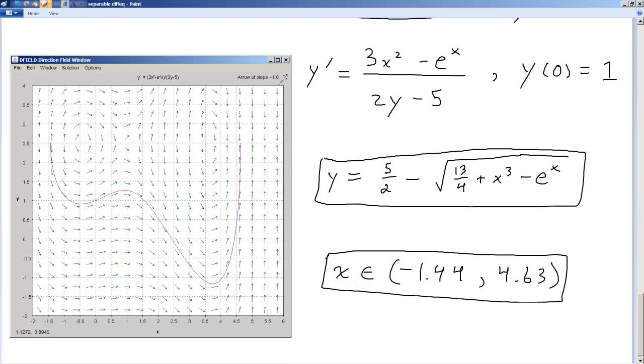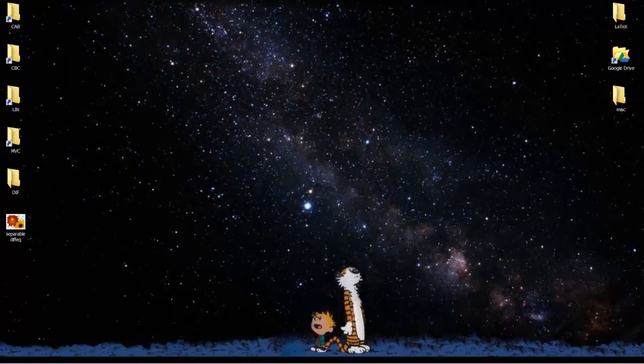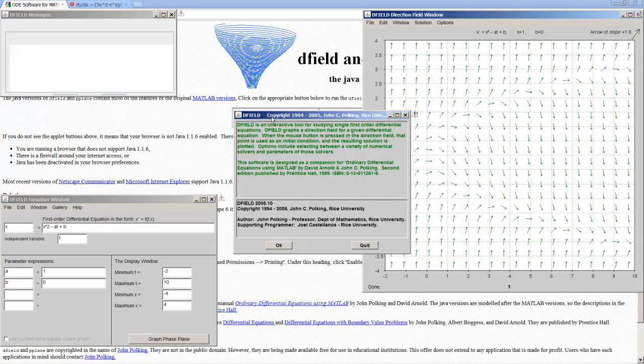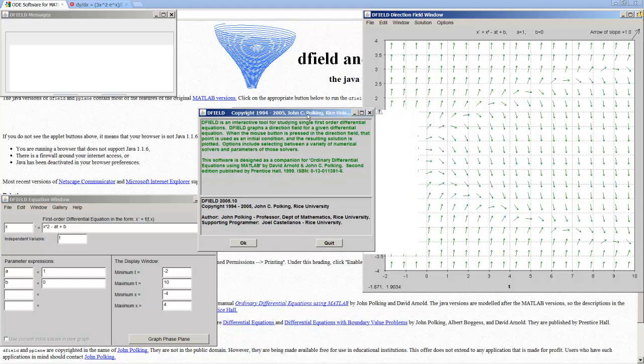You may be wondering how I generated this picture. How did I get this thing happening? This is pretty nice. So here's how I did it. I went to Dfield and Pplane. Really, really nice online Java applets. I clicked on Dfield. And it brings up Dfield. I click OK.